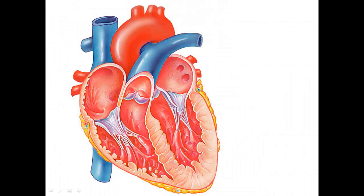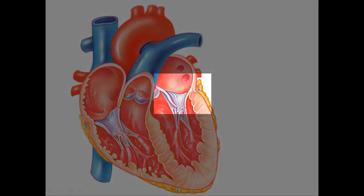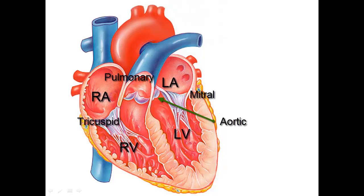The blood goes out to the lungs and then returns via the pulmonary veins into the left atrium. The blood from the left atrium crosses the mitral valve into the left ventricle. The anatomists call this the bicuspid valve, but we'll stick to the clinical name and use mitral. The left ventricle then pumps the blood out through the aortic valve into the aorta and then to the systemic circulation.